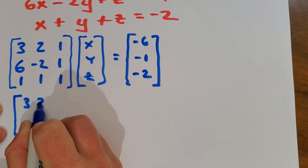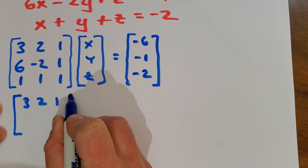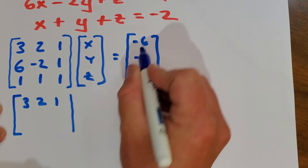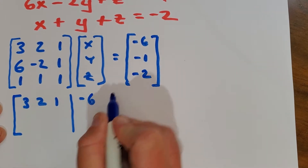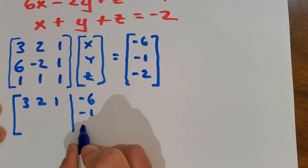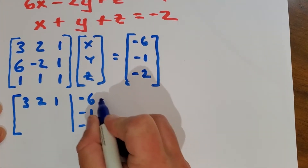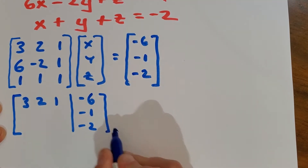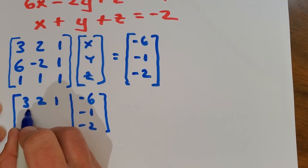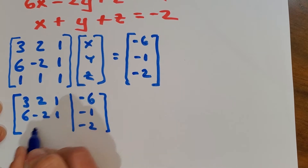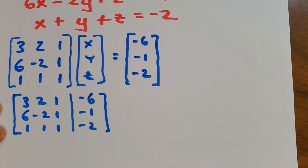They'll say 3, 2, 1, and then maybe put a line for the x, y, z, and then over here they'll put negative six. You just recopy all these things, so basically with a line representing the x, y, and z. Here you have 6, minus 2, 1, and then 1, 1, 1, like this.